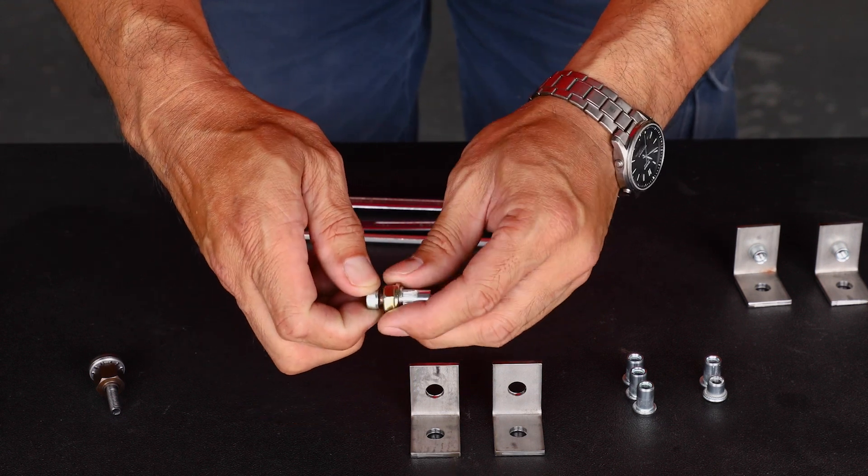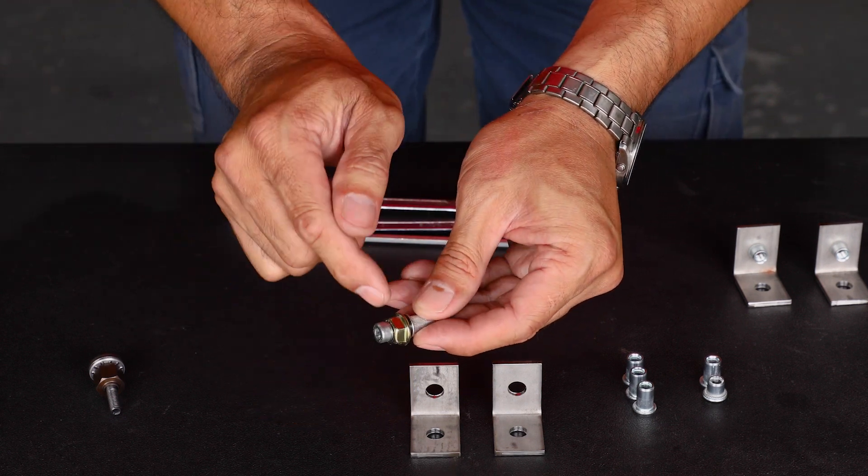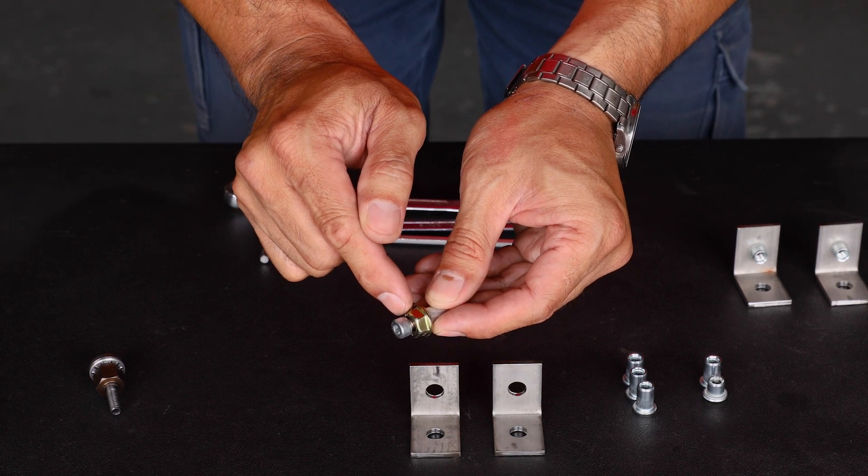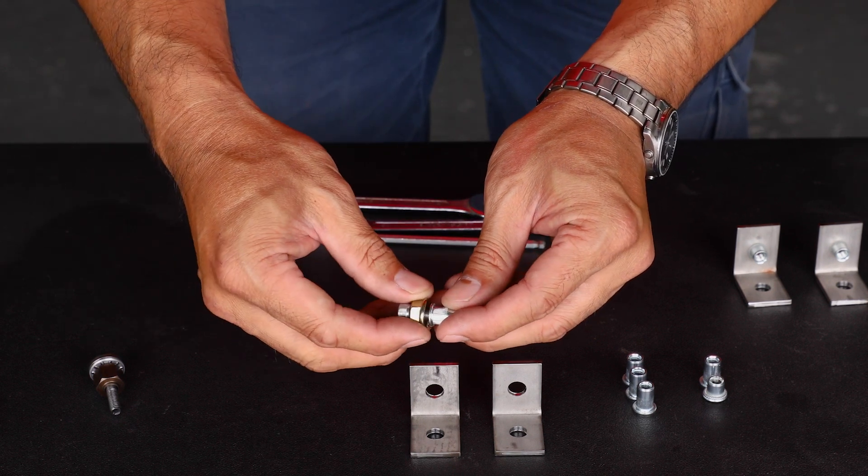Now a little tip, put a little bit of lubrication between the nut and the head of the socketed cap screw that allows that to rotate a little bit more easily.